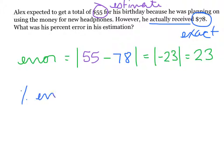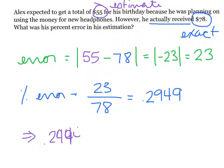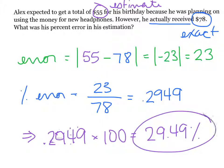To find percent error, we take the error of 23 over the exact, which was 78. When we divide, we get .2949. To finish this off, we take the decimal we found of .2949 and multiply it by 100. This results in 29.49%. Because we were asking what was his percent error, Alex's estimate of his birthday money was 29.49% off.